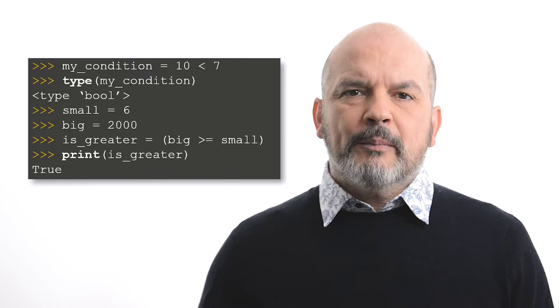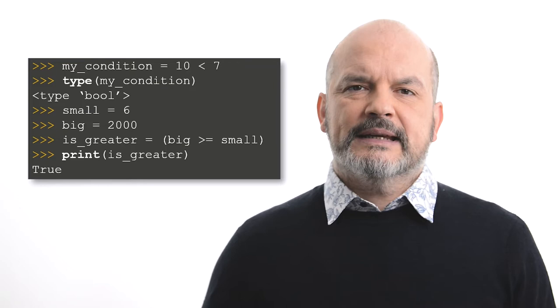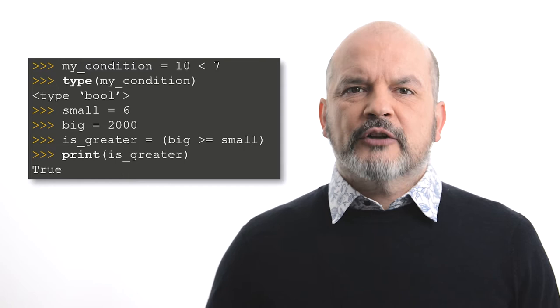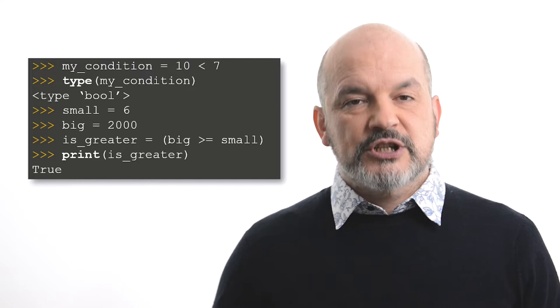Comparison also applies to variables of compatible type, as shown with the variable is_greater. When the expression big >= small is evaluated, both variables are evaluated first and the expression becomes equivalent to 2000 is greater or equal to 6, which is true.